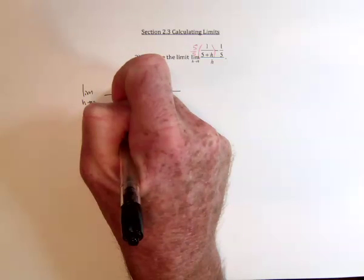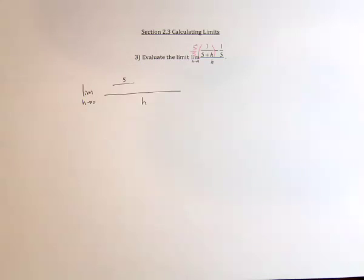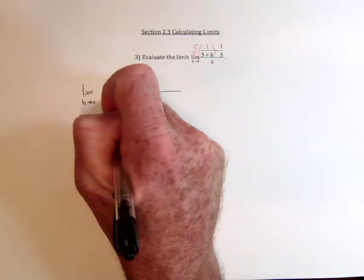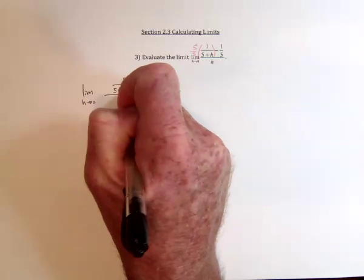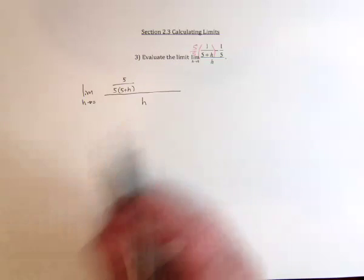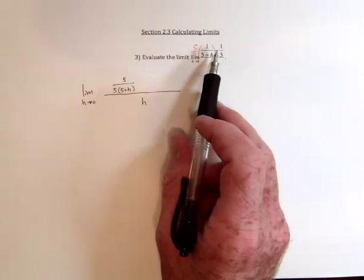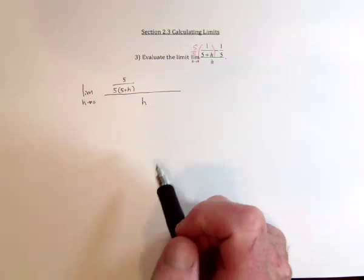So the numerator would look like 5. The denominator would look like 5 times (5 plus h). And I'm not going to multiply that out for now. I might need to later, but I'm just going to wait and see.